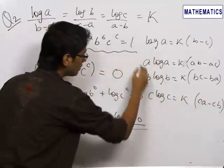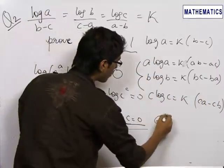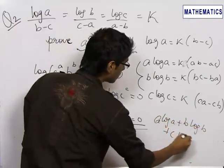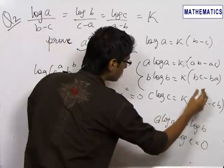Clearly, on adding these three equations, we get a log a plus b log b plus c log c equals zero, which proves our desired result.